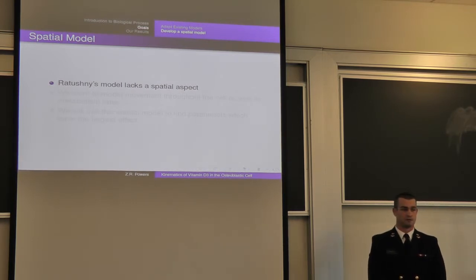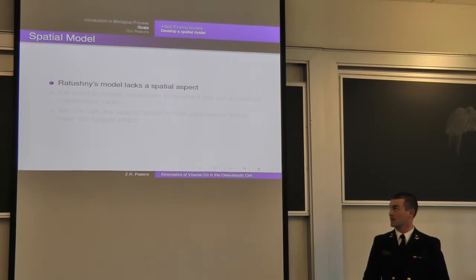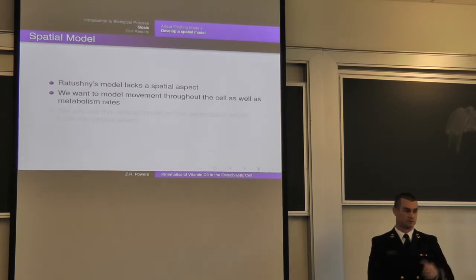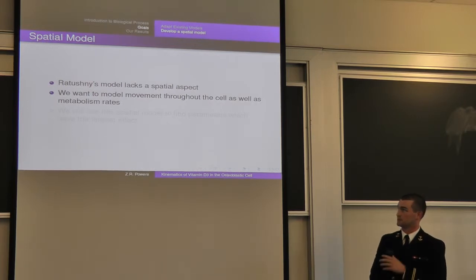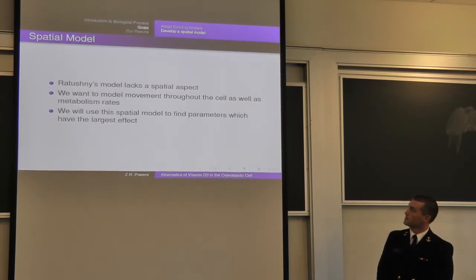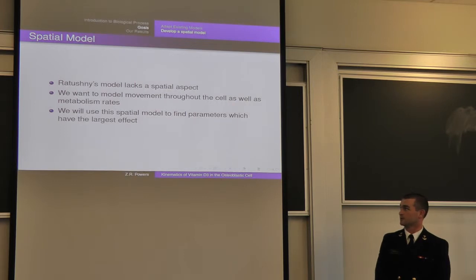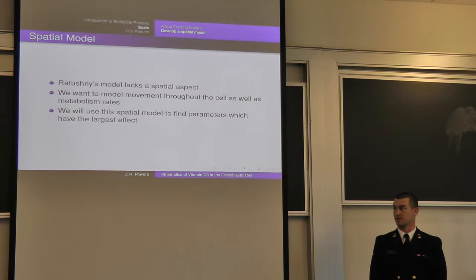One thing we wanted to improve on was that Rattushinib's model did not have a spatial aspect — it was purely kinematic, purely time-based, just the time it took to move through various stages in the cell. So we wanted to model movement through the cell as well as the time it takes for the different metabolism processes to take place. We used a spatial model to determine which particular parameters have the largest effect on the time it takes for absorption and metabolism from 25D into 125D.